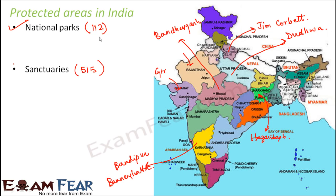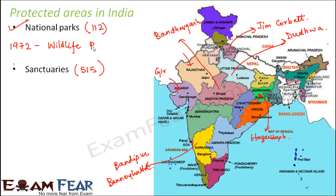In 1970 there were only 5 national parks, so from 1970 to 2012 the number increased from 5 to 112 — a huge increase. This increase is mainly because of the Wildlife Protection Act which came in 1972. Once this act came into picture, a lot of emphasis was given on protecting different animals, and in order to protect them, these national parks were created.